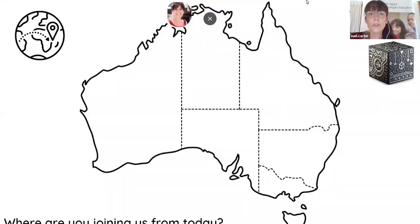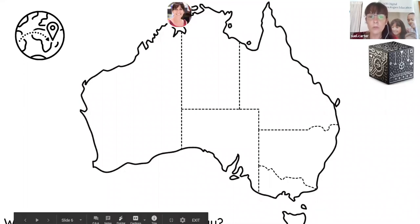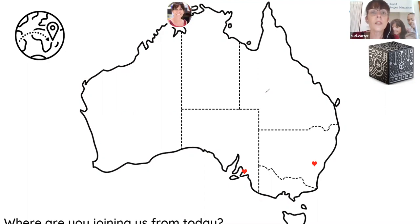Before we get into that, I'd love to know where you're coming from today. On this map of Australia, it would be great if you could put where you're from. We have the annotate tool — click on annotate, then go to the stamp, and you'll be able to stamp either an arrow, star, heart, tick or cross to let us know where you're from. When you've done that, click back on the mouse so we don't have stamps throughout the session.